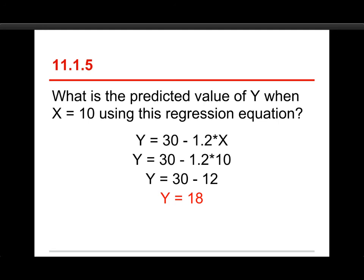Just take the equation y is equal to 30 minus 1.2 times x. And the question gives us a value of x of 10, so we just plug that in for the x. So 1.2 times 10 is 12. That gets us to the third line, 30 minus 12, and gets us to 18. And that's it for the first quiz. See you in a minute.